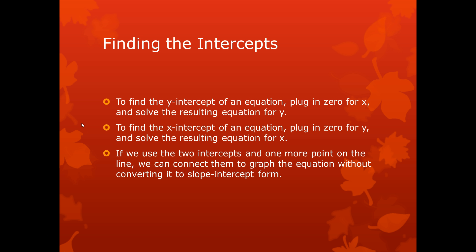So, finding the intercepts. To find the y-intercept of an equation, plug in 0 for x and solve the resulting equation for y. To find the x-intercept of an equation, you do the opposite. You plug in 0 for y, and you solve the resulting equation for x. If we use the two intercepts and one more point on the line, we can connect them to graph the equation without converting the equation to slope-intercept form.